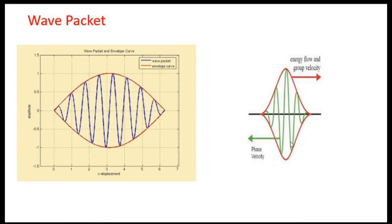Observe the figures: at points where the two waves interfere constructively, the amplitude of the wave packet is maximum, and the probability of finding the material particle is also maximum. At points where there is destructive interference, the amplitude is zero and the probability of finding the particle at those edges is zero. The probability is maximum where the amplitude of the wave packet is maximum.